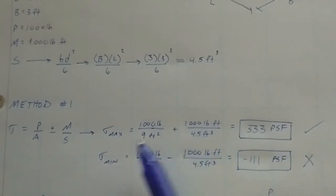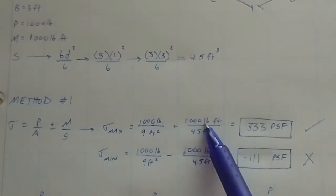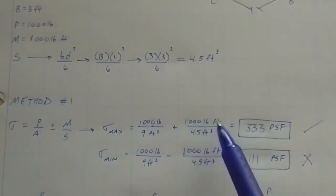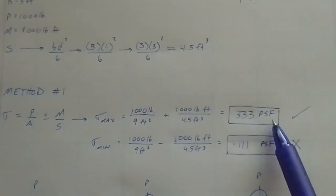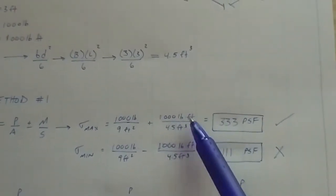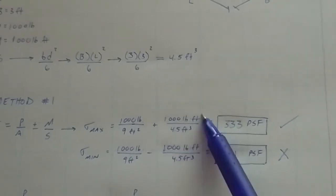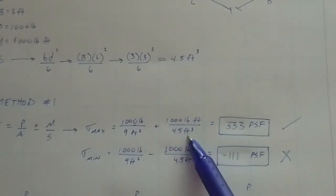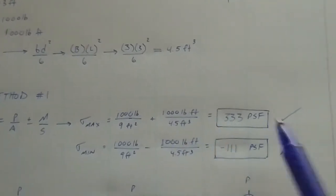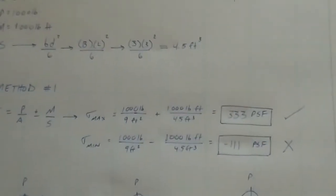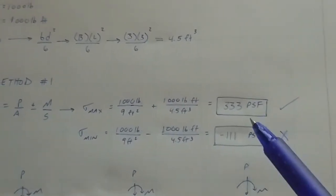So we have method one, which is P over A plus or minus M over S. When we go our max pressure or max bearing pressure or stress, we focus here, is just P over A, 1,000 over A is just the area of the bottom of the footing, so 3 times 3. That's pounds over feet squared, so force over area, so you know you're good there. And then plus, so our max is always the plus. So max stress is plus M over S, so 1,000 over 4.5, gets you 333 PSF. And again, pound-feet over cubic feet, you cross out a foot and a foot, that gets you pound over feet squared, force over area. Good.